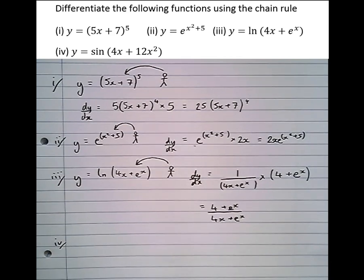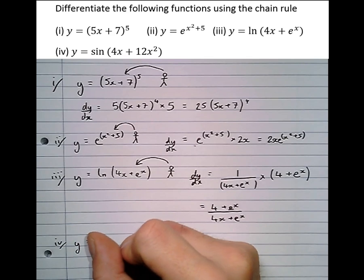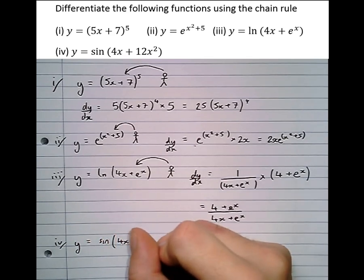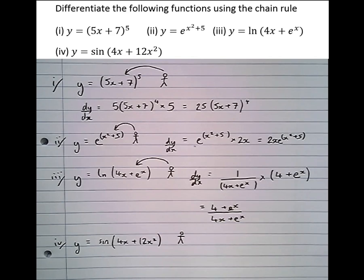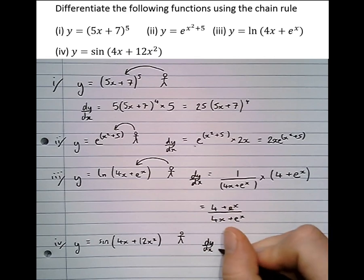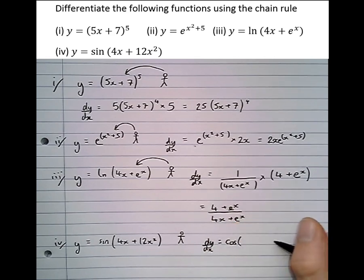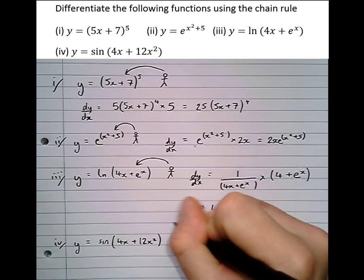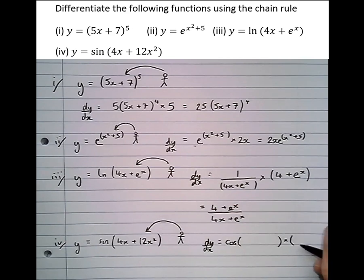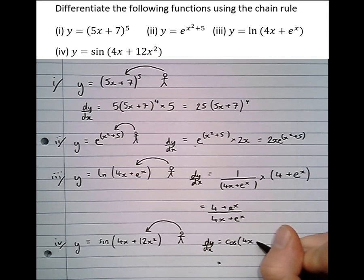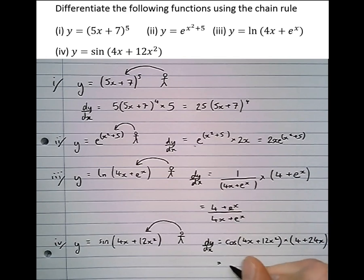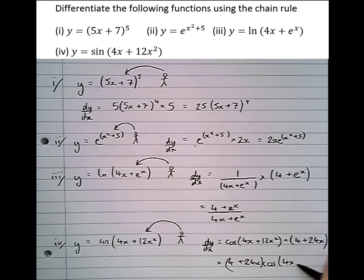Finally, in the context of trigonometry: y equals sine of (4x plus 12x squared). Imagine the person standing outside the bracket. dy/dx: the differential of sine of something is cos of something. Then, not being satisfied, we look inside the bracket and multiply by its differential, which is 4 plus 24x. Therefore, the differential is (4 plus 24x) times cos of (4x plus 12x squared).